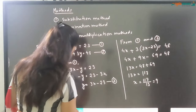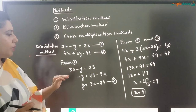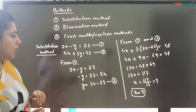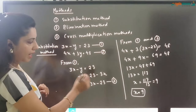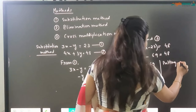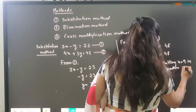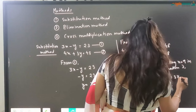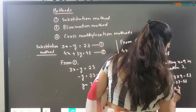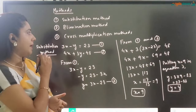After getting the value of x as 9, put this value in any of the equations — equation 1, 2, or 3. Look for the smaller equation; equation 3 is convenient. Putting x equals 9 in equation 3: y = 3 into 9 minus 23 = 27 minus 23 = 4. So the value of y is 4. This is how we get the value of x and y using the substitution method.